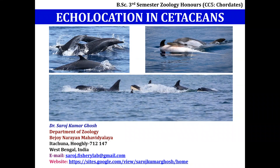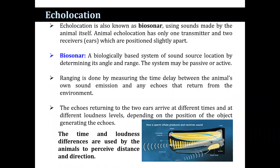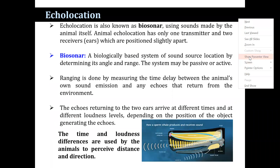Echolocation is the emission of sound pulses and use of returning echoes to gain information about the surrounding environment. Echolocation is also known as biosonar, using sound made by the animal itself. The animal has only one transmitter and two receiver organs — the two ears, positioned slightly apart — and ranging is done by measuring the time delay between the animal's own sound emission and the echoes that return from the environment.